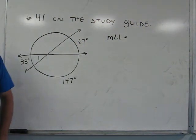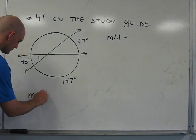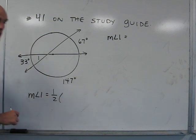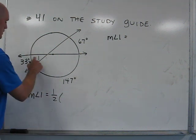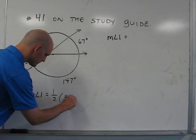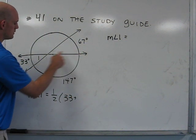We know that we have a theorem that says the measure of angle 1 is equal to one-half the sum of the arc included by the angle, and the arc included by the vertical angle from angle 1.